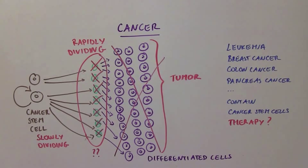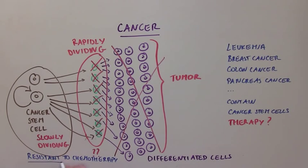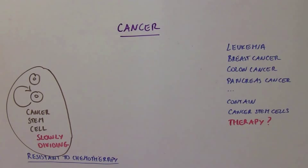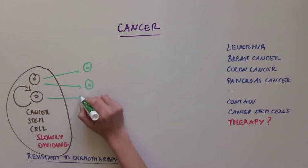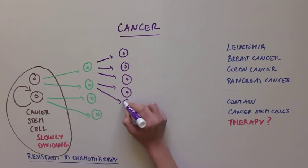But chemotherapy would not do a very good job at killing the cancer stem cells, since they don't divide very rapidly. So the cancer stem cells would be resistant to chemotherapy. As you can see, a cancer that is fueled by cancer stem cells may initially respond to chemotherapy, but eventually the tumor would reappear due to the perseverance of cancer stem cells.